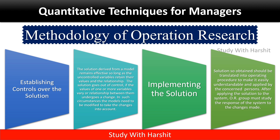Establishing controls over the solution: The solution derived from a model remains effective so long as the uncontrolled variables retain their values and relationships. The solution goes off control if the value of one or more variables varies, or the relationship between them undergoes change — in such circumstances the model needs to be modified. Implementing the solution: The solution obtained should be translated into operating procedures to make it easy, understandable and applicable by concerned people. After applying the solution, the OR group must study the response of the system to the changes made.